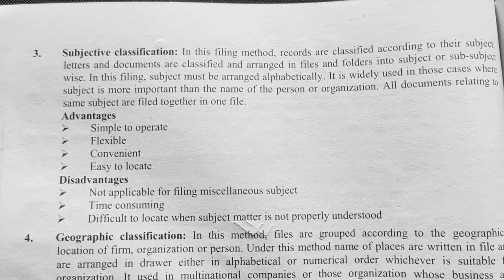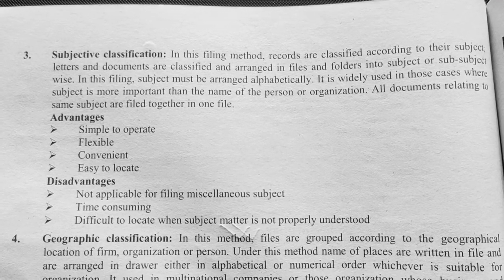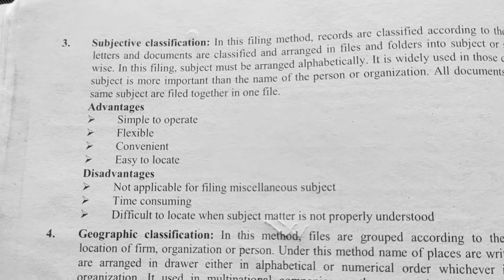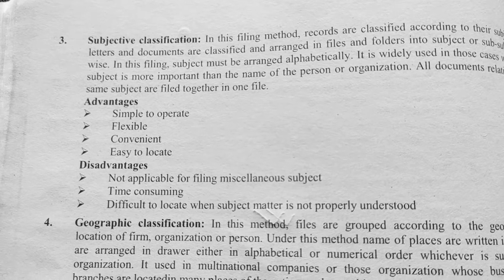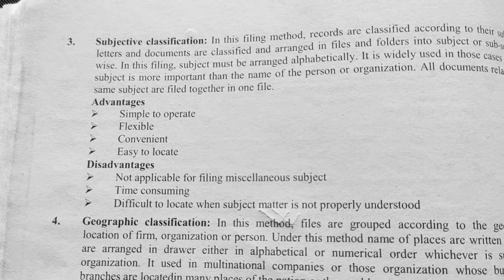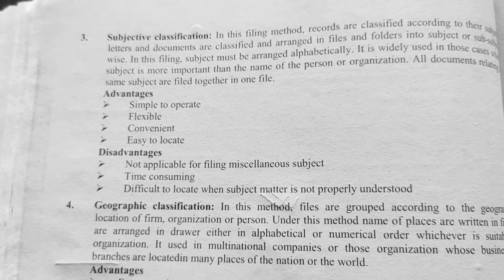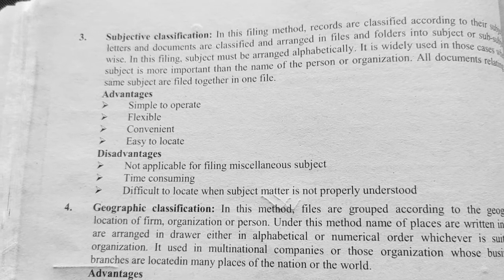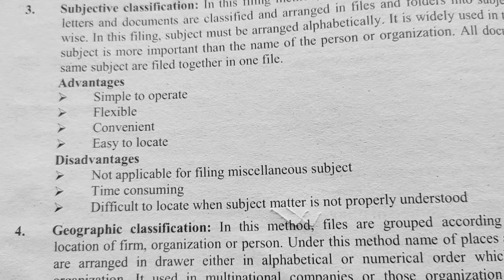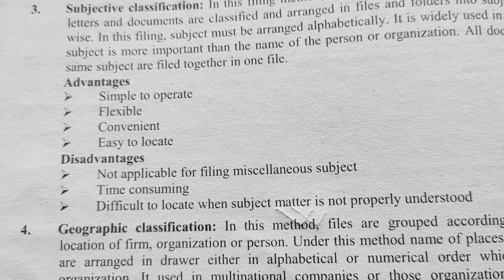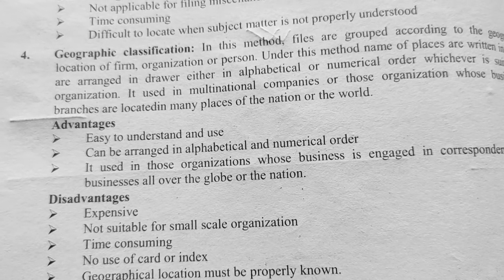Coming to another classification: subject classification. In this method, records are classified according to their subject. Letters and documents are arranged in folders subject-wise or sub-subject-wise. It is widely used in those cases where the subject is more important than just the name of the person. Here are some of the advantages and disadvantages listed below.